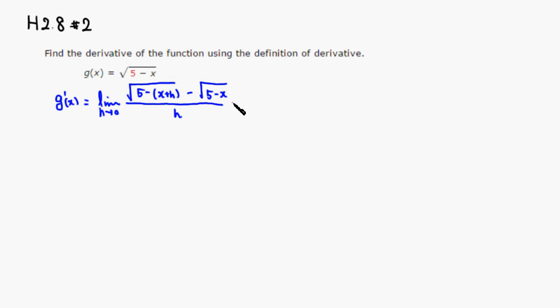Then we can use the trick. Multiply top and bottom by square root of 5 minus x plus h plus square root of 5 minus x. And we're going to have to do the same thing to the denominator so that we don't change the quantity there.